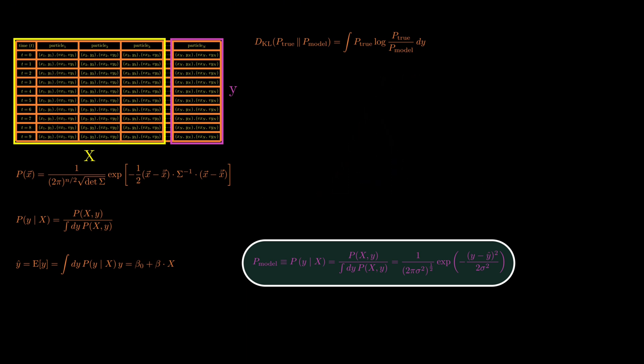To proceed, we first expand the K-L divergence. It becomes two terms. One is the entropy of the true distribution, and the second is the expected log likelihood under our model. Since the first term doesn't depend on the model parameters, we focus on maximizing the second. That means we want to maximize the average log of the model probability evaluated at the true Y values.